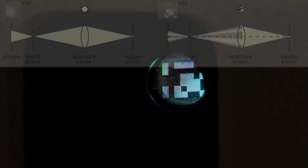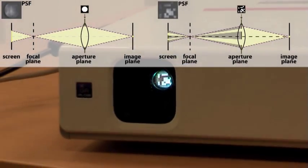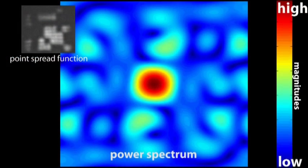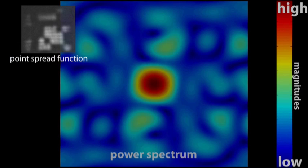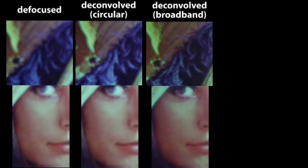To overcome this problem, we apply a coded mask at the aperture plane of the objective lens that produces only few low Fourier magnitudes. It is more broadband in the frequency domain. Consequently, more frequencies are retained and more image details can be reconstructed after deconvolution.